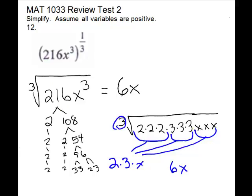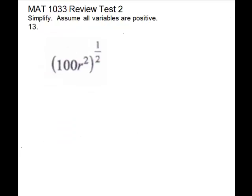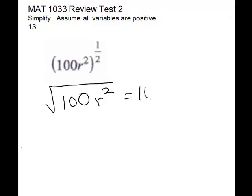Our answer is 6x. Problem 13 is also in rational exponent form, so we will switch to radical form. Our denominator is 2 on the fraction, so that will be a square root. We'll put it back under a radical — we don't have to write the index of 2. We have 100r squared. These are both perfect squares. The square root of 100 is 10, and the square root of r squared is r.